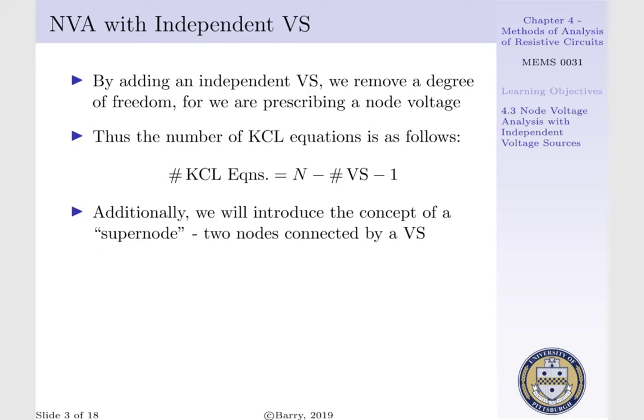We are prescribing the voltage at our node. Thus, the number of KCL equations needed when we have an independent voltage source is as follows: our number of KCL equations is equal to our number of nodes, less the number of voltage sources we have, less unity.